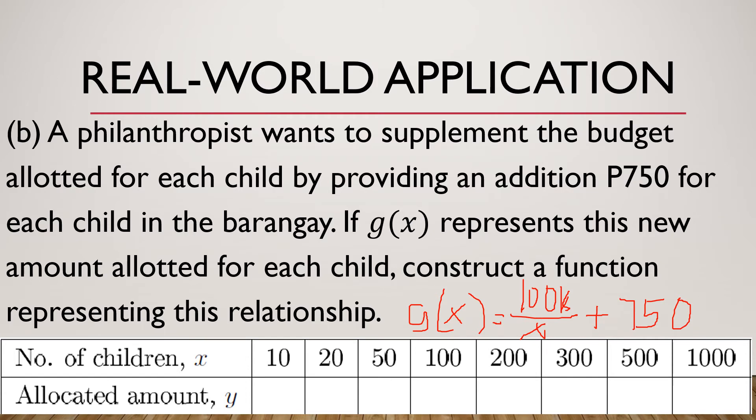In other words, whatever value we compute for y earlier, we're just going to add it by 750. Say for example, a while ago, we computed that if there are 10 children who will be receiving the assistance, and we computed that the allotted amount per child is 10,000, so 750 will be added to 10,000 and that will be 10,750.